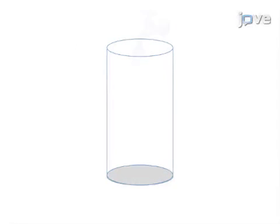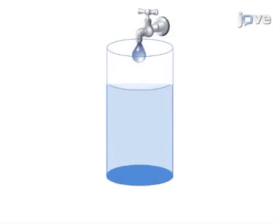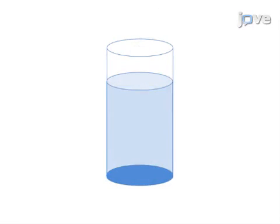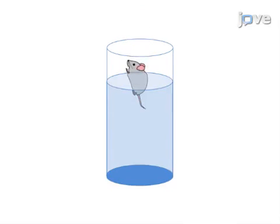This is accomplished by first preparing transparent cylindrical glass containers filled with water to a depth in which the mouse cannot touch the bottom with its hind legs. The second step is to place each animal in a water-filled cylindrical container and film the behavior of the mice for a total of six minutes.